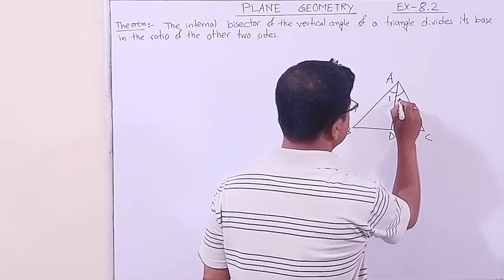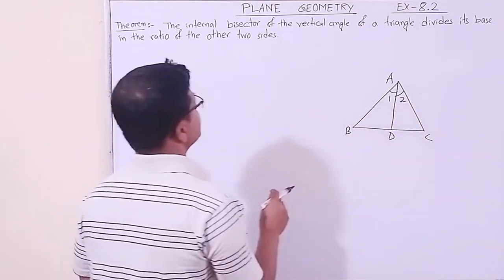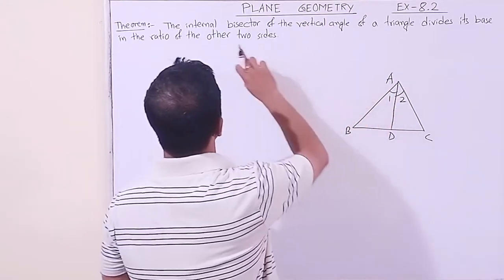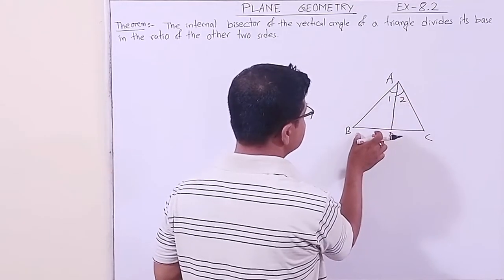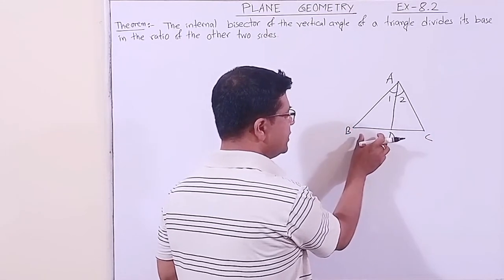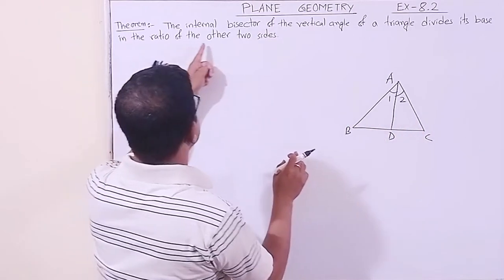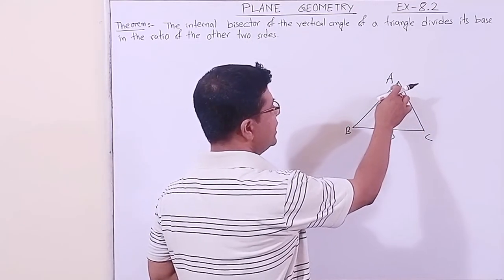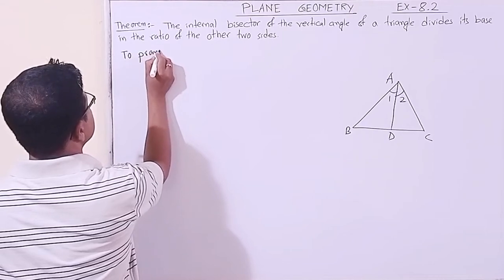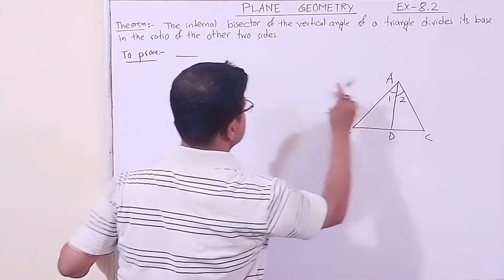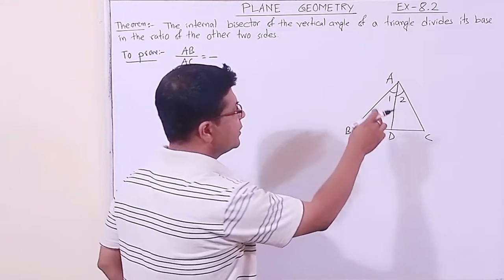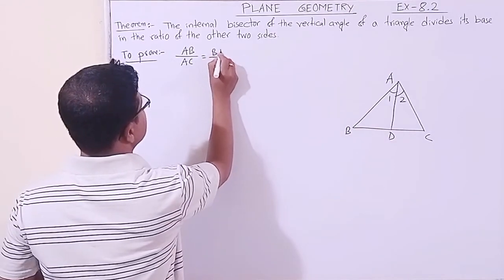Suppose this angle is named angle 1 and this is angle 2. What we have to prove? The internal bisector divides the base BC at point D, so BD by DC equals the ratio of the other two sides. To prove: AB by AC equals BD by DC.